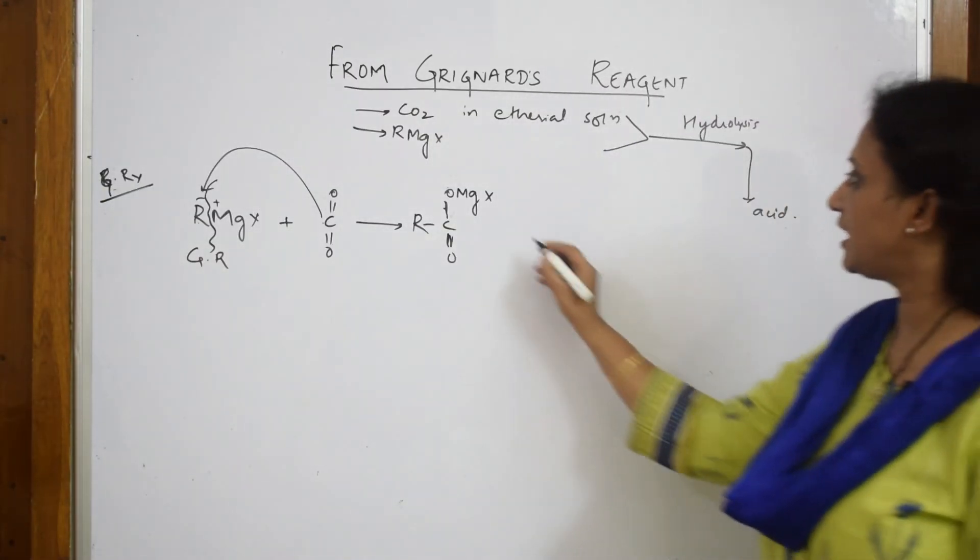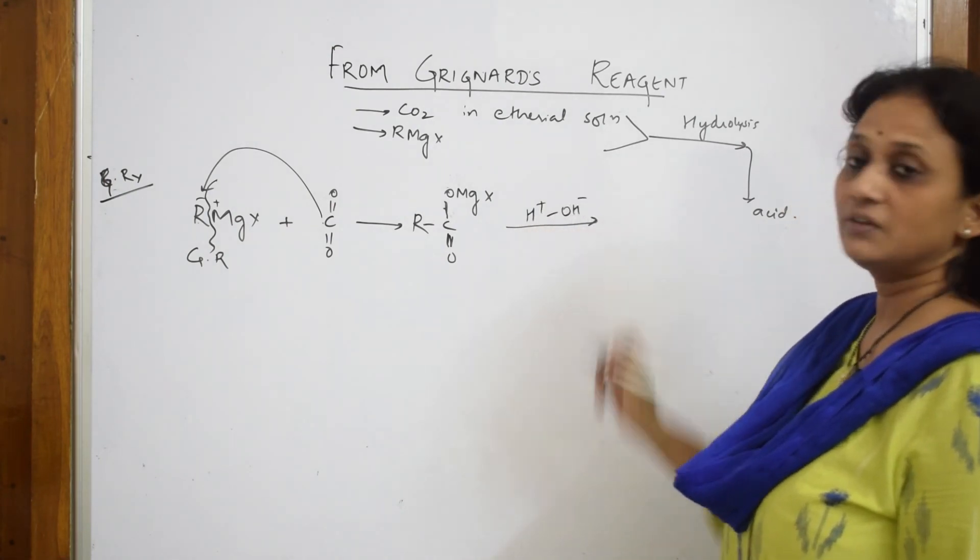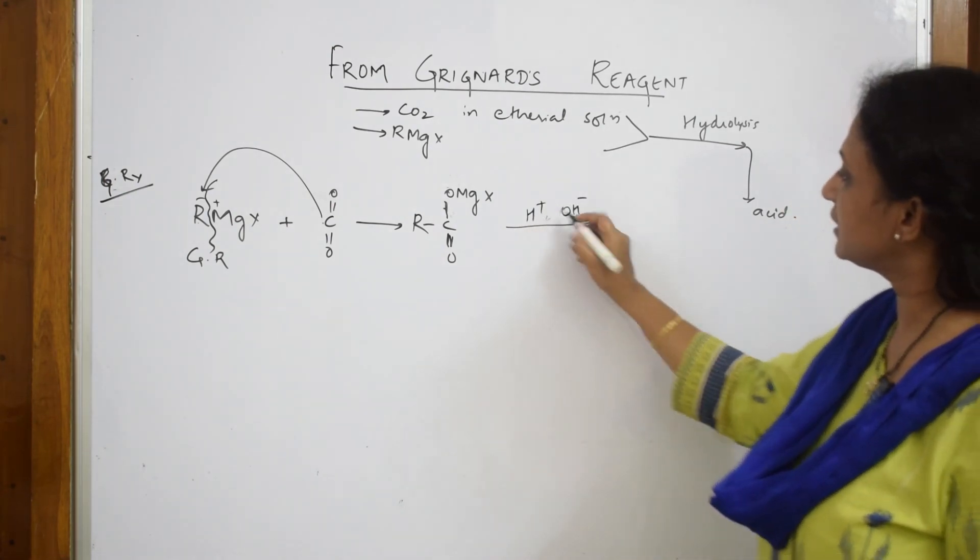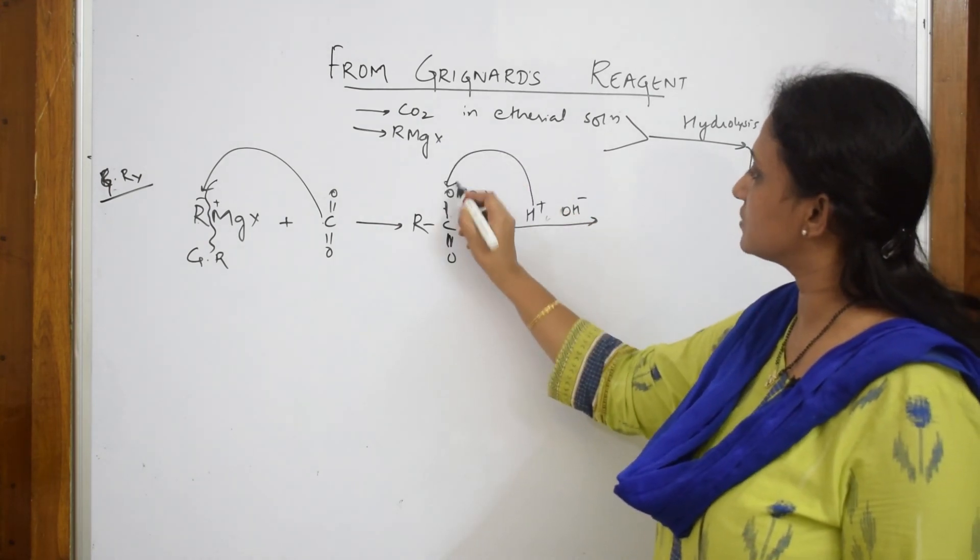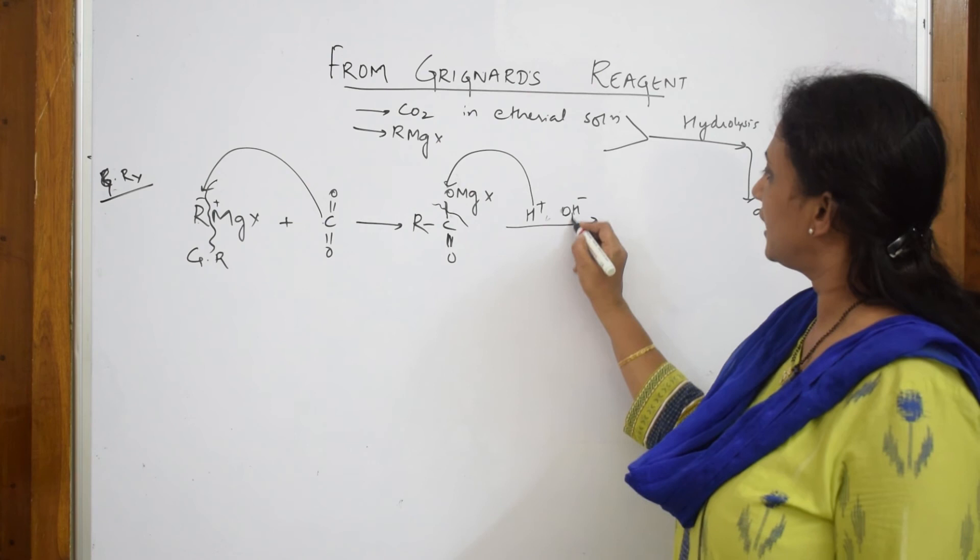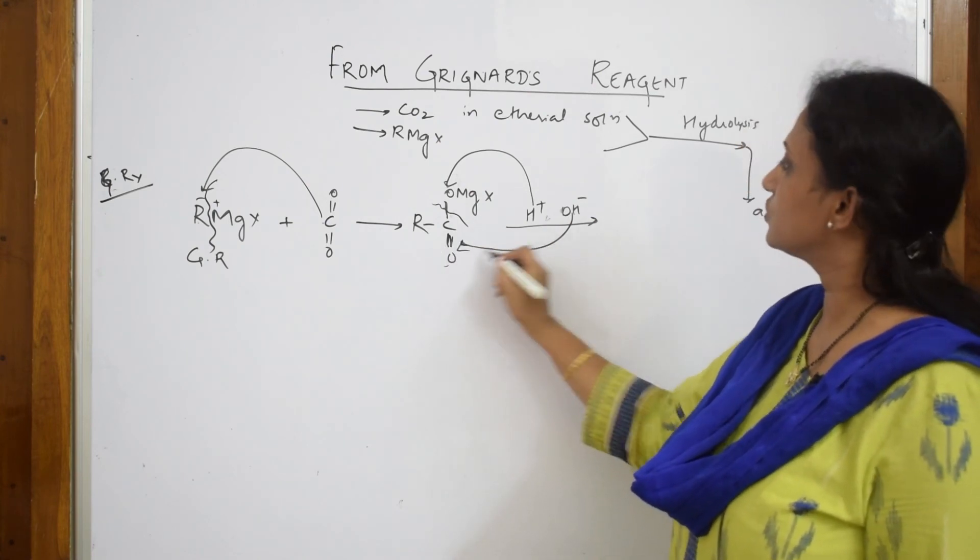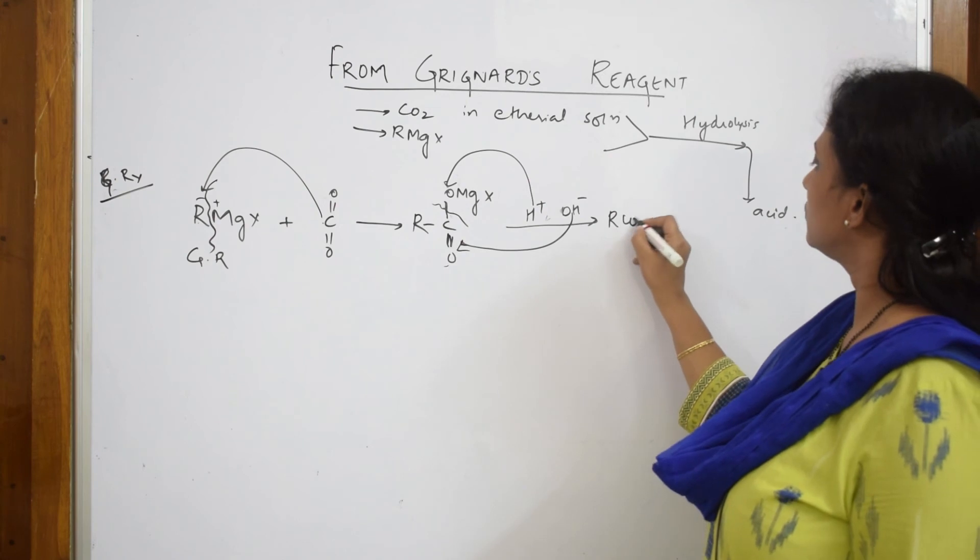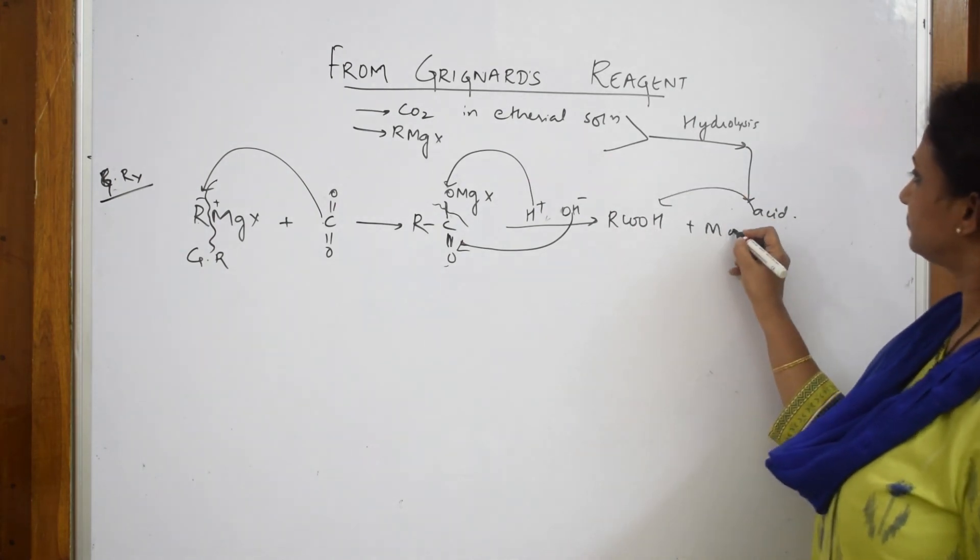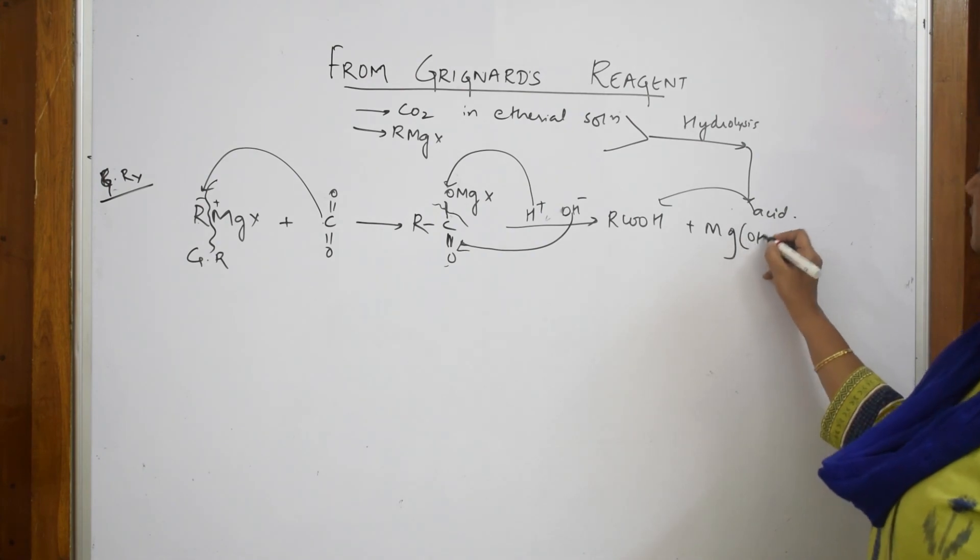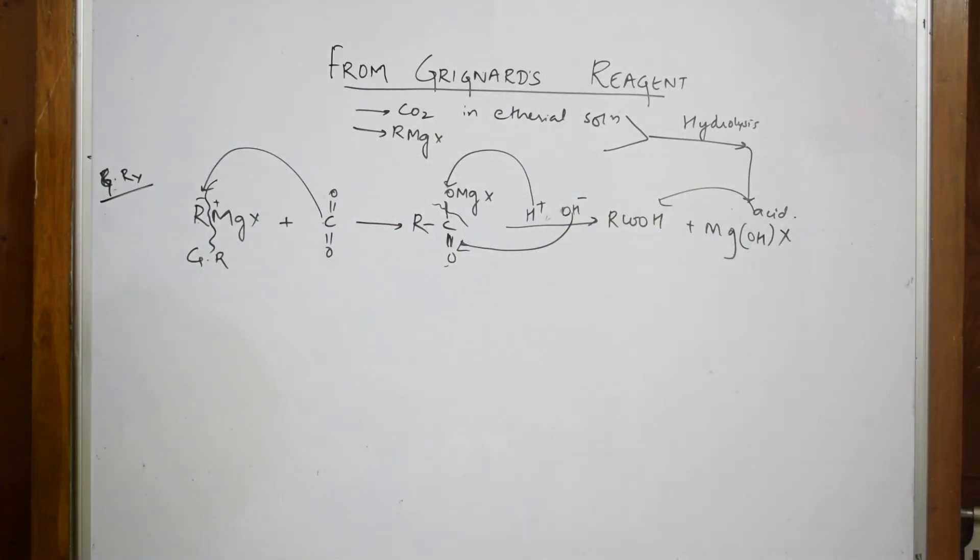Now what are we going to do? We are going to further hydrolyze this. When you're hydrolyzing, H+ and OH-. When you hydrolyze this particular thing, your H goes and adds to this because there is a cleavage of the bond here, and your OH goes and adds to this. What do I get? R-COOH, acid, plus Mg(OH)X. This is your acid. This is how you are going to prepare.